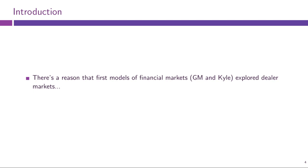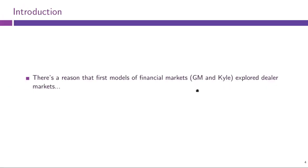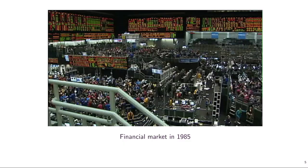There is a reason for this. All of these papers were written quite a long time ago — the Glosten-Milgram and Kyle models were written in 1985 and the Stoll model even earlier. If you look at financial markets as they appeared at that time, almost all trading was conducted on the physical trading floor.